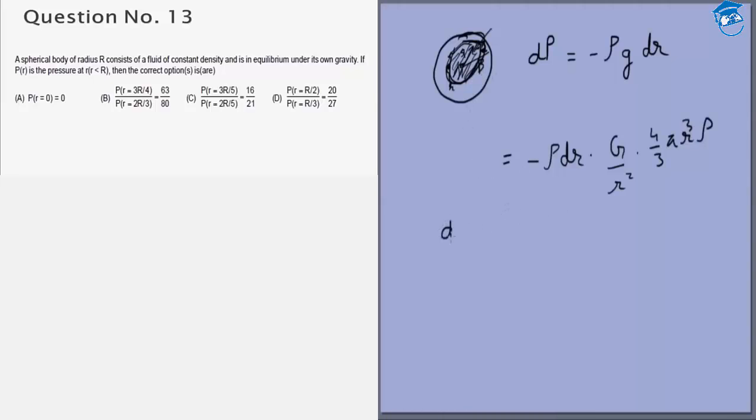So from this we get dp is equal to minus rho squared into 4 by 3 pi G integral of r dr. And p goes from 0 to capital P and r goes from capital R to r.